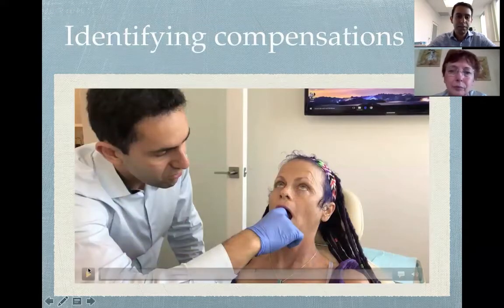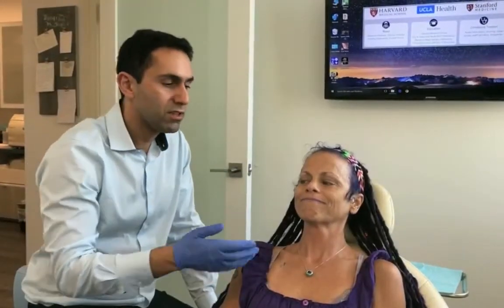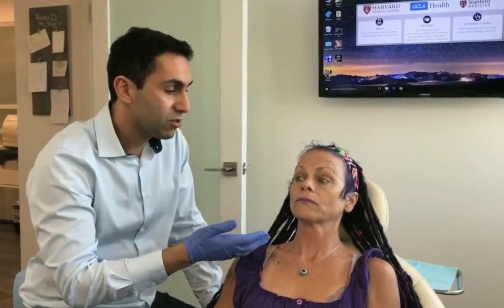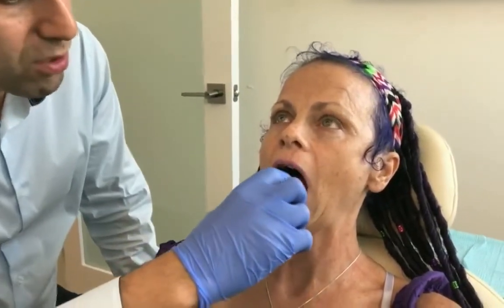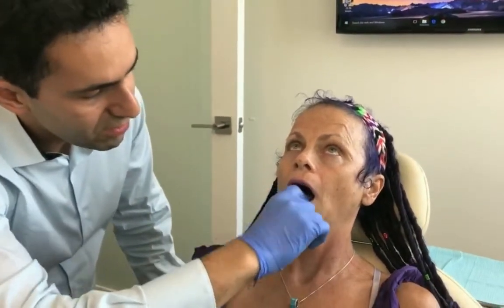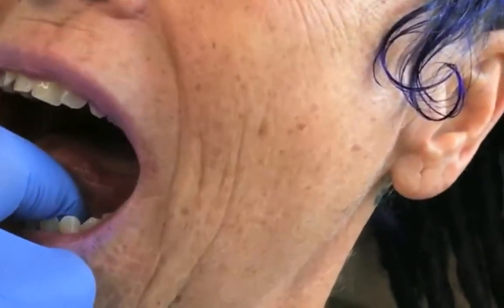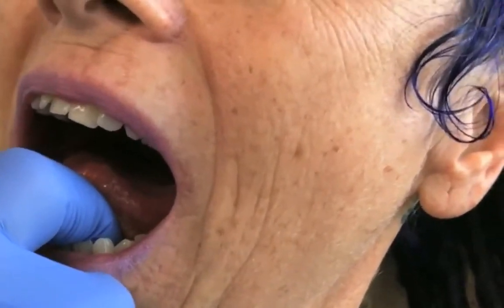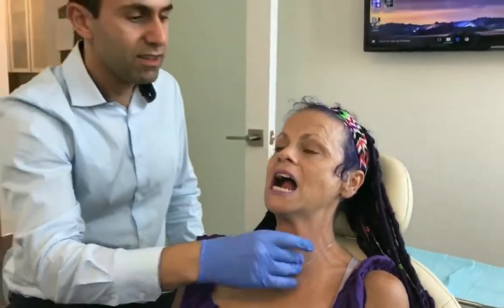Here's an example showing how we identify compensations. We demonstrate in our patient a grade four compensating to grade two tongue presentation. When asked to open up and lift the tongue, she's able to lift all the way, but she's pulling up the floor of her mouth and straining a lot with her neck — you can see all this tension just to lift the tongue. This is because the tongue is physically tethered to the floor of the mouth, so she has to use muscles in her neck and jaw, contributing to her chronic jaw pain.